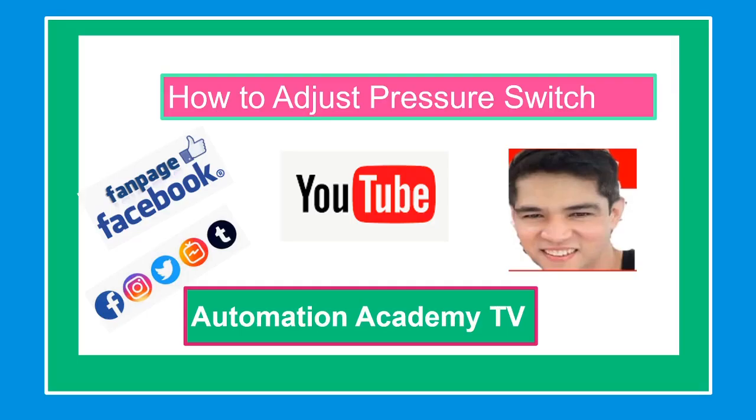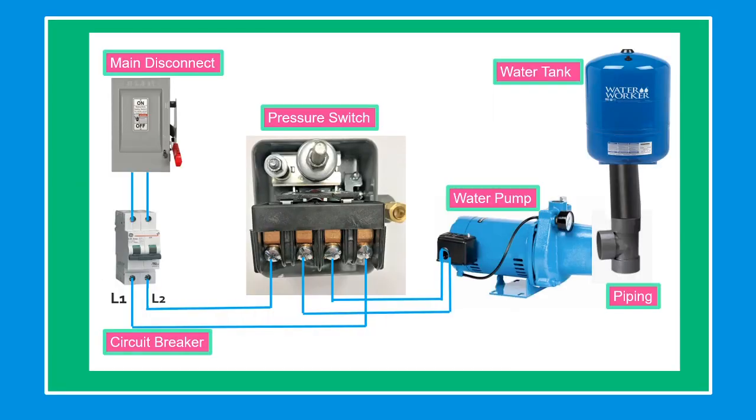Our topic for today is how to adjust pressure switch, but first we are going to discuss the parts and functions of water pump. The main disconnect is used to shut off the entire unit or circuit. The circuit breaker is designed to protect the circuit from short circuit and ground fault circuit interruption.